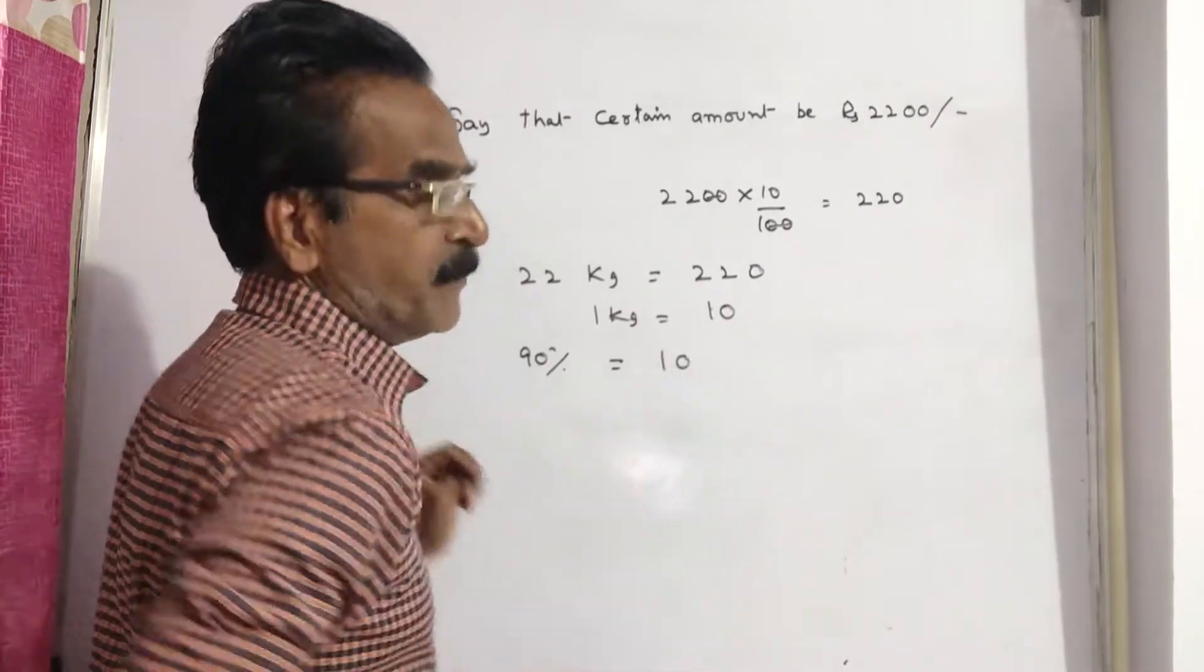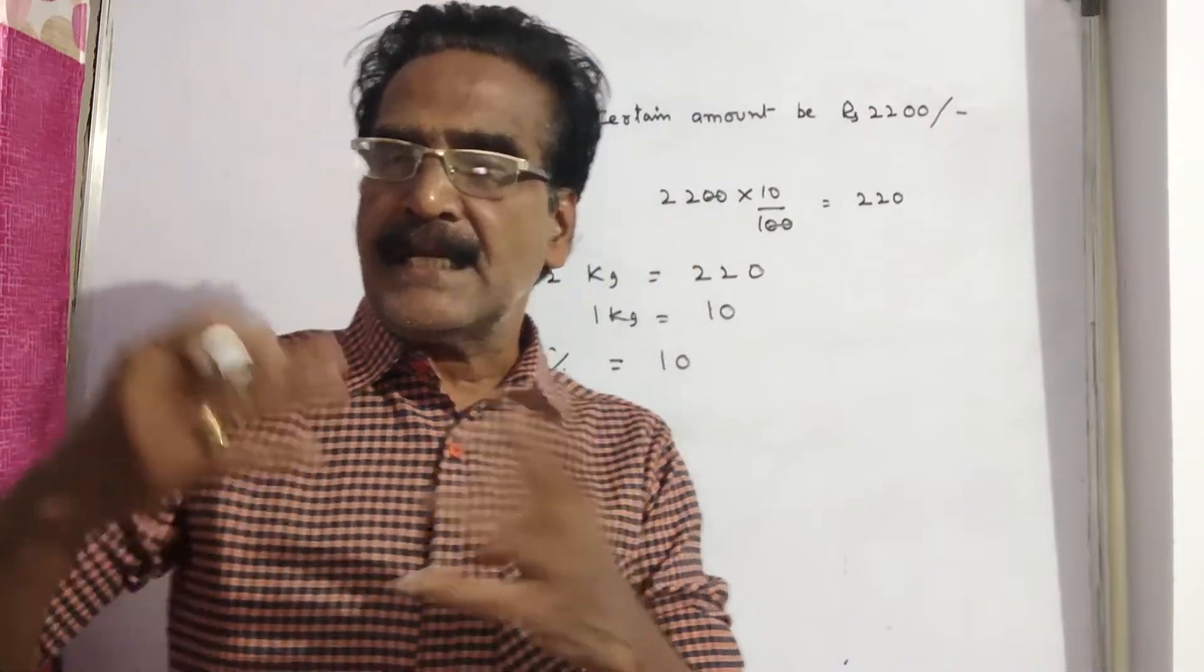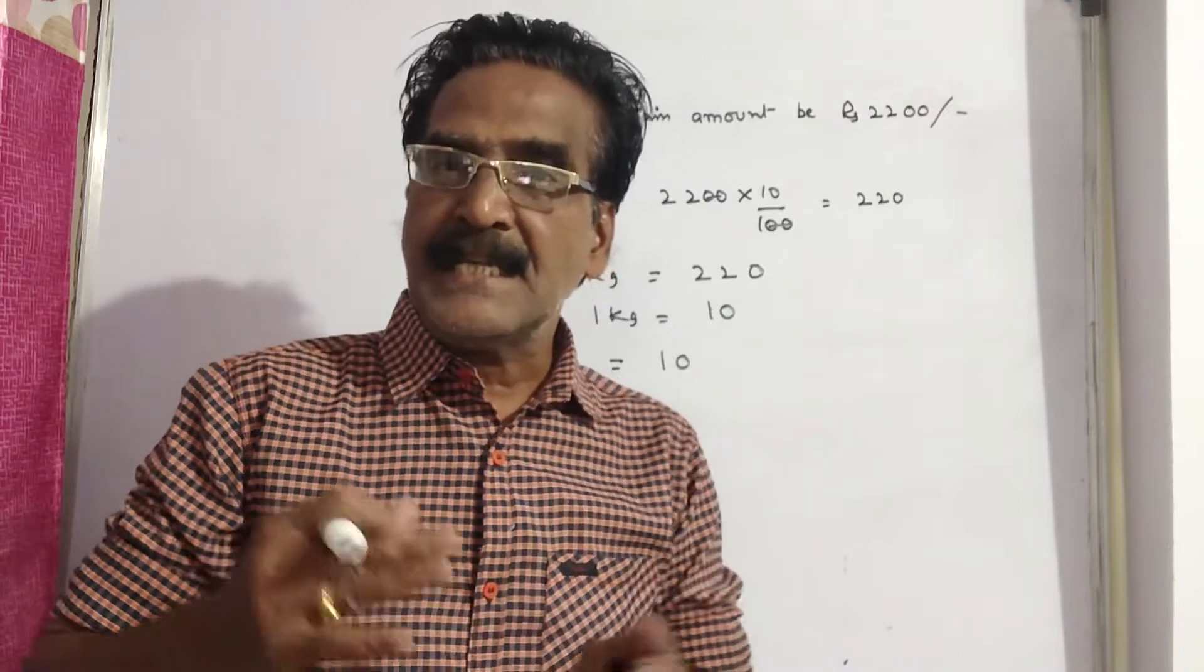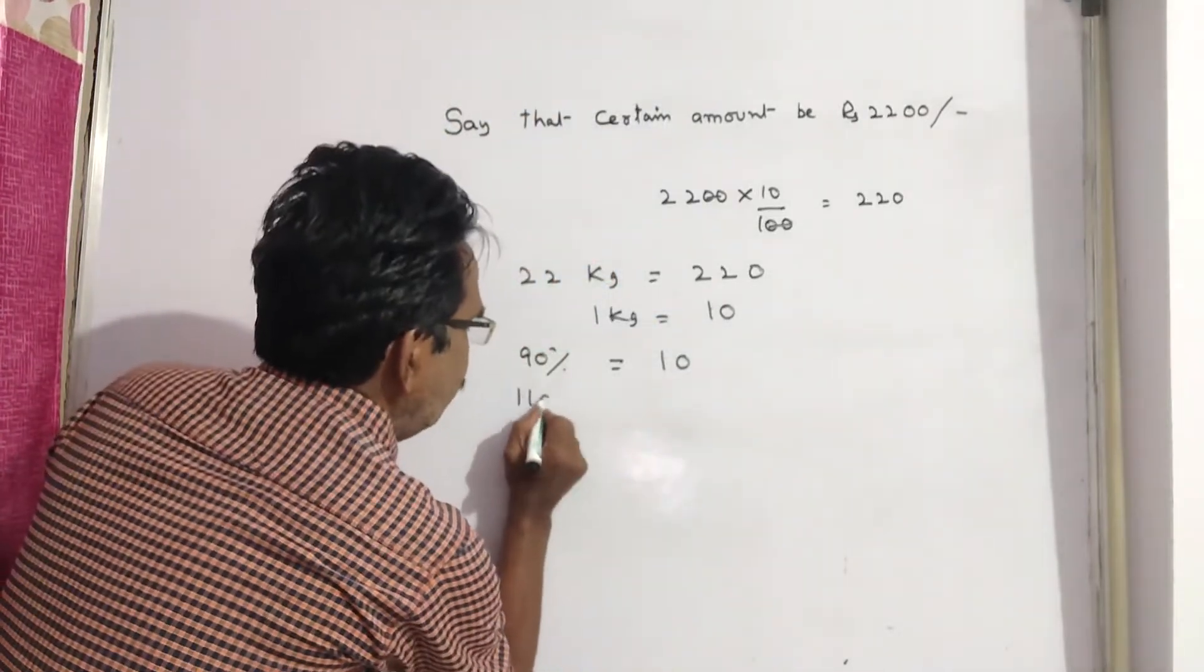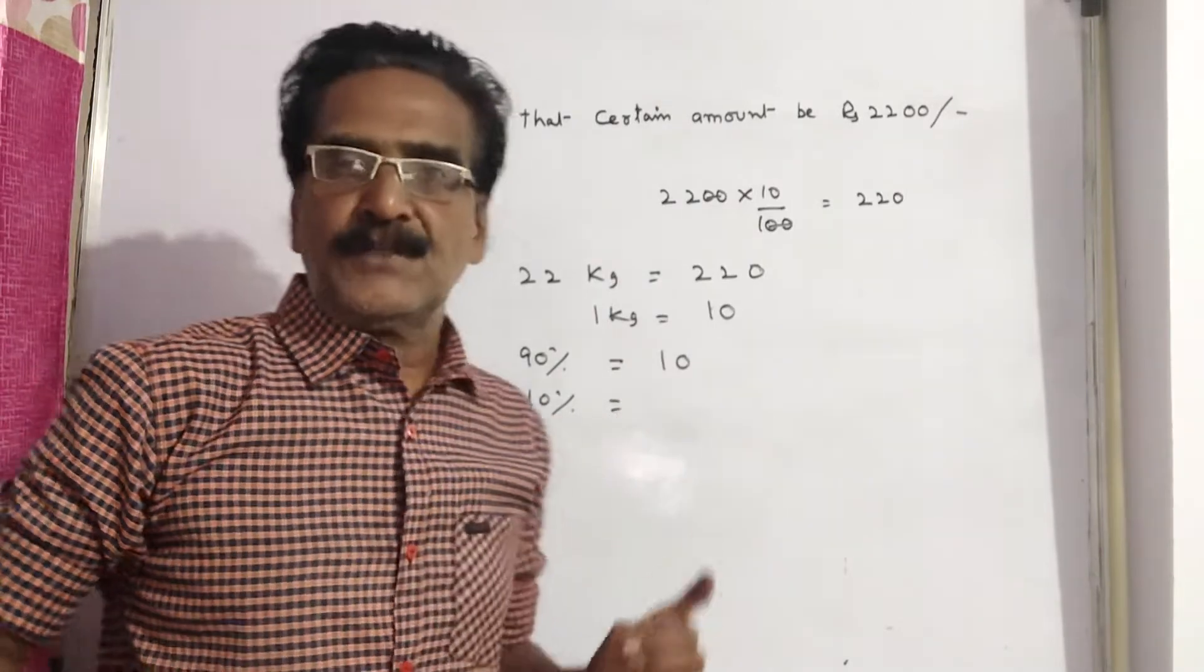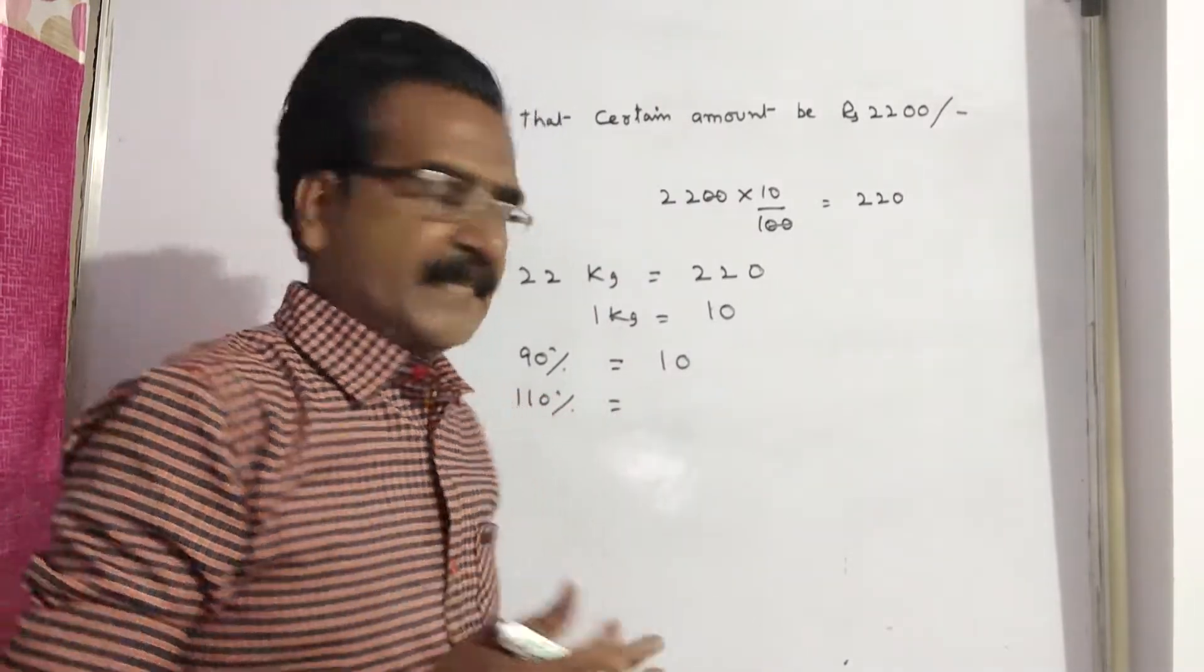Now the question is, had the price been increased by 10 percent, that means if the price becomes 110 percent. So let us find the price of 1 kg sugar at 110 percent.